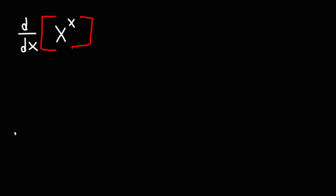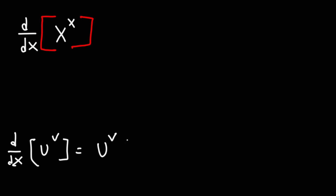So let's begin. Here's the formula you need to use. The derivative of u raised to the v is equal to u raised to v, times v times u prime over u, plus v prime times ln u.